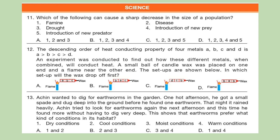Question 13: Ah Chin wanted to dig for earthworms in the garden one hot afternoon. He got a small spade and dug deep into the ground before he found one earthworm. That night it rained heavily. Ah Chin looked for earthworms again the next afternoon and this time he found more without having to dig very deep. This shows that earthworms prefer what kind of conditions in its habitat? One: dry conditions, two: cool conditions, three: moist conditions, four: warm conditions.